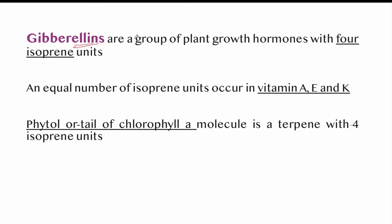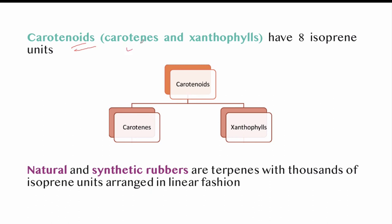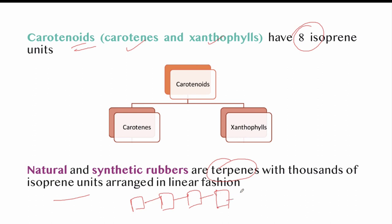Gibberellins are a group of plant growth hormones with four isoprene units. An equal number of isoprene units occur in vitamins A, E, and K. The phytol tail of chlorophyll a is a terpene with four isoprene units. Carotenoids, made up of carotenes and xanthophyll, have eight isoprene units. Natural and synthetic rubbers are terpenes with thousands of isoprene units arranged in a linear fashion.